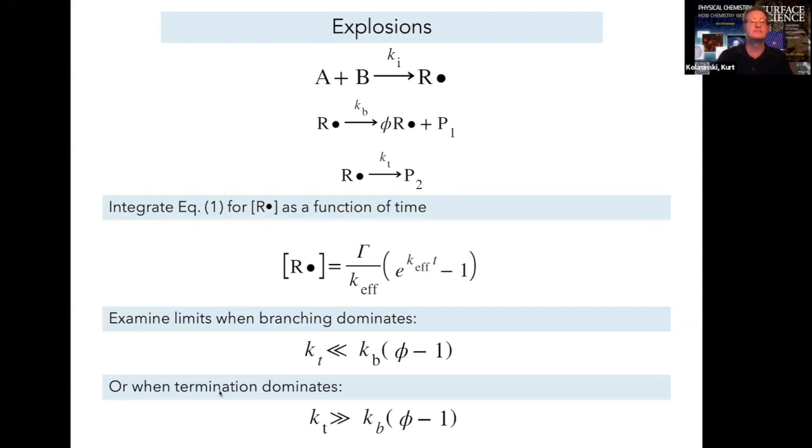On the other hand, if termination dominates, then Kt is much larger than the product of Kb and phi minus 1.